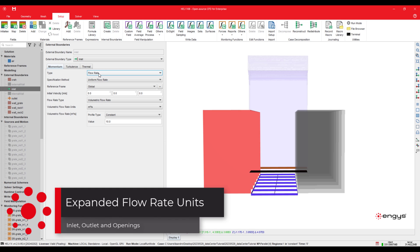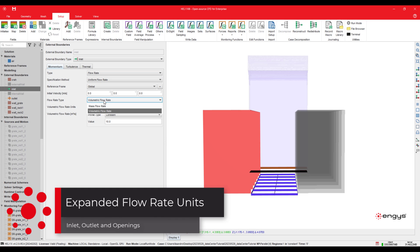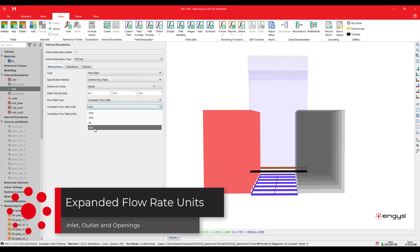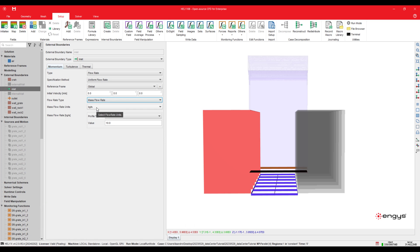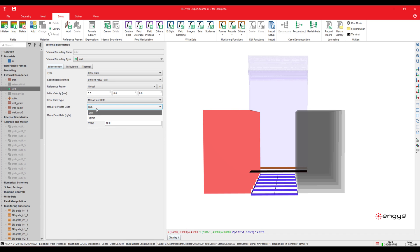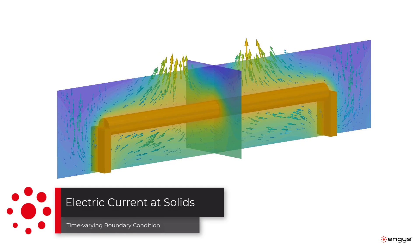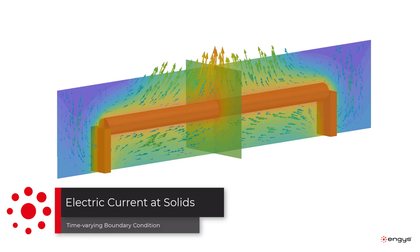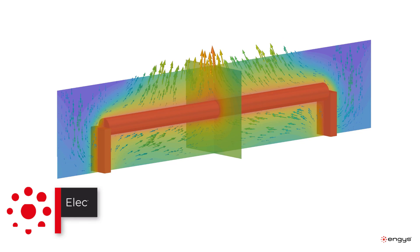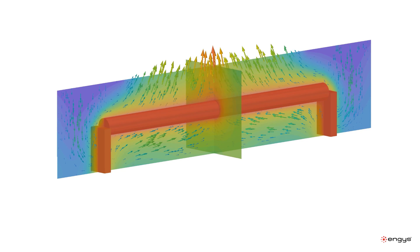We have also expanded options for users to input flow rate at inlets in other units rather than just cubic meters per second, since it's quite useful to use different units for several applications. Finally, for dual heating multi-domain thermal simulations, users can now employ a time-varying function for defining electric current applied to solids, as shown in the animation.